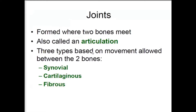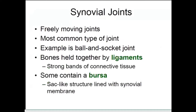There are three types of joints based on movement between two bones: synovial, cartilaginous, and fibrous. The synovial joint is a freely moving joint and the most common type. An example is a ball-and-socket joint.